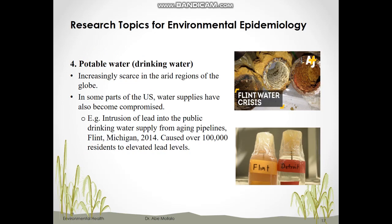Another research topic is potable water, which has become increasingly scarce especially in arid regions. An example of contaminated potable water is the intrusion of lead into the public drinking water in Flint, Michigan in 2014. The disaster occurred after officials changed the source of drinking water from Lake Huron to the Flint River. Due to aging pipelines, lead leached from water pipes into the drinking water, exposing over 100,000 residents to elevated blood lead levels. Lead can cause adverse problems especially in the brain and kidneys.